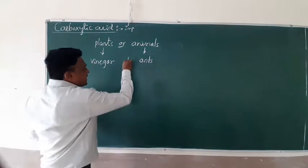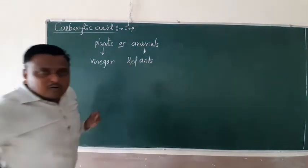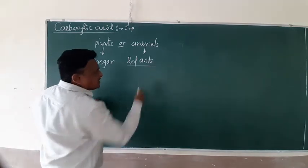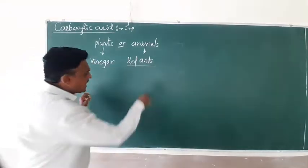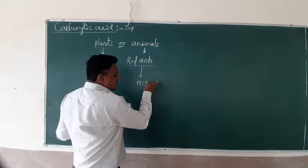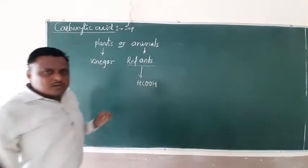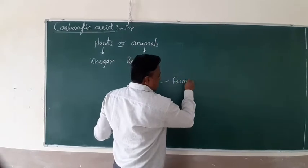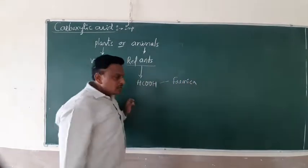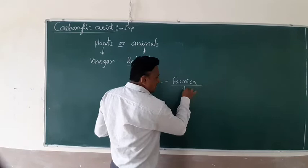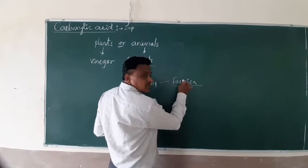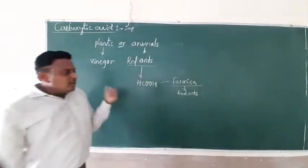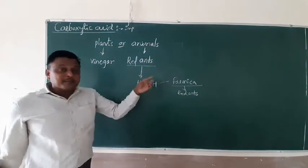So how can you get this carboxylic acid from the red ant? Yes friends, the red ant having an acid, yes, this is HCOOH. In Latin word, we pronounce it as formica. The formica in English means it is the compound, it is a red ant. So by the grinding of a red ant, you can get the formic acid.